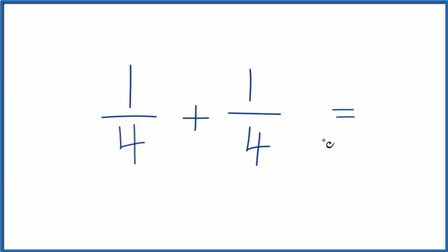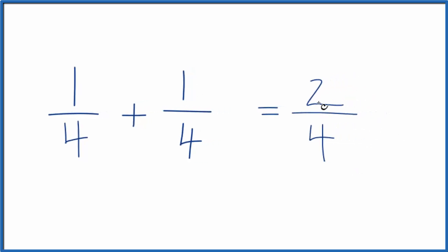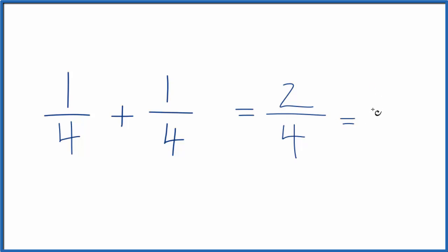So 1 plus 1 is 2, and we bring the 4 across. We can reduce 2/4, though, because 2 goes into 2 one time, and 4 divided by 2 is 2. So 1/4 plus 1/4 equals 1/2. Both 2/4 and 1/2 equal 0.5.